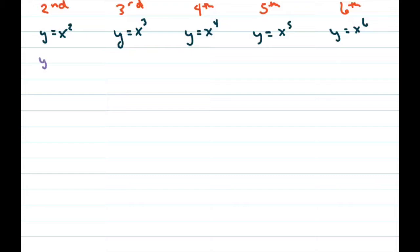This is y prime would be 2x, and the second derivative would be just 2. And then for this one, we'll do y, first derivative is 3x squared, second derivative, y double prime is 6x, and so the third derivative is just 6.